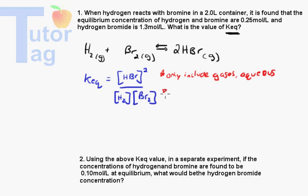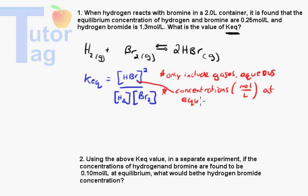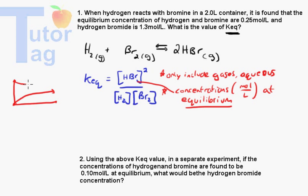The other important thing is that these are concentrations measured in moles per liter at equilibrium — not before equilibrium. Remember, when we had our graph last lesson, there was a point where the lines reached a flat line, which was at equilibrium. So these concentrations are measured at that equilibrium point, not before it.